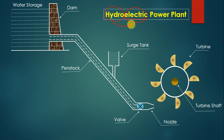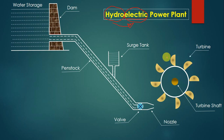There are three major important parts in this power plant. The first part is the dam, the second part is the turbine house, and the third part is the penstock. These are the three important parts of a hydroelectric power plant. The dam is required to store water at a higher height.